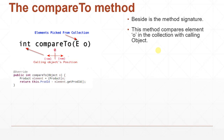This method compares element 'o' in the collection with the calling object. The calling object is also an element of type E. So if we store complex numbers in a TreeSet, the incoming parameter is a complex number and the calling object is also a complex number.